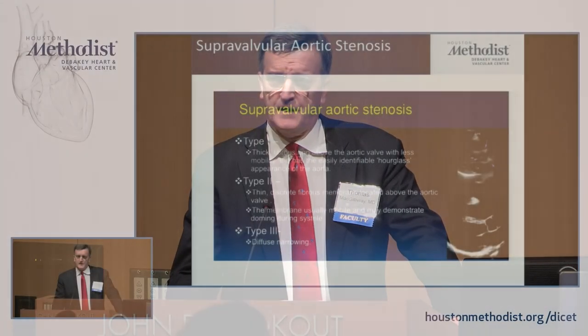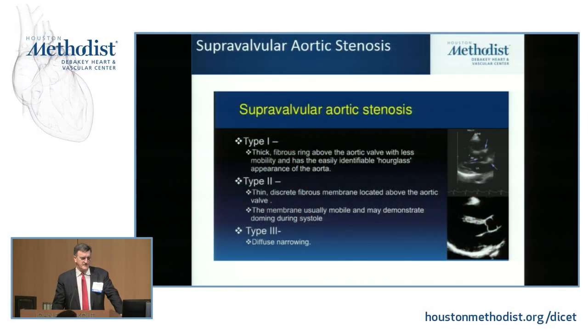I have no disclosures, but I'm working on them. So we're going to start with talking about supravalvular aortic stenosis. It's an unusual lesion, but that doesn't keep us from subdividing it into several different types. Type 1 is a thick fibrous band just above the aortic valve or at the level of the sinotubular junction. Type 2 is a membranous lesion just above the valve. And type 3 is a more diffuse narrowing.